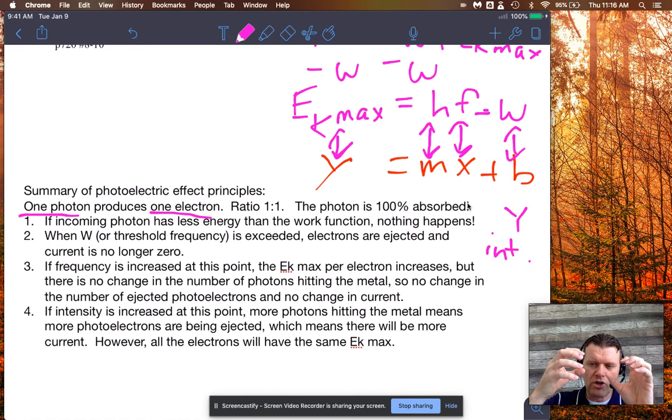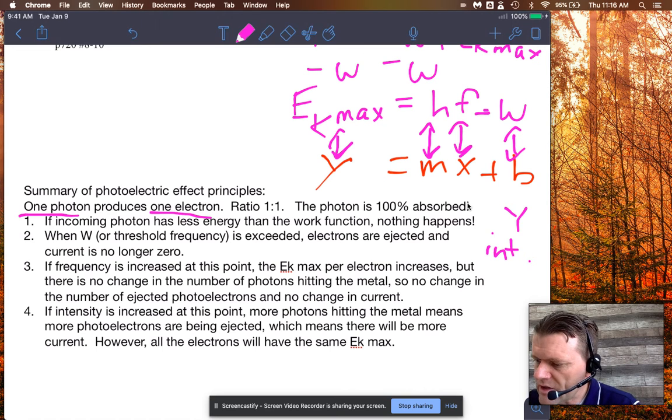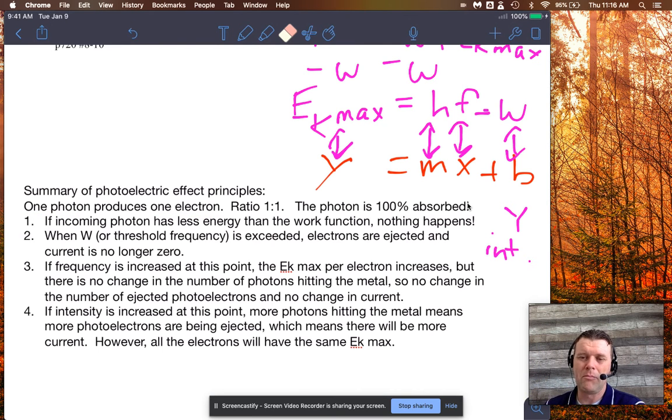So, the photon doesn't exist anymore after it hits the metal. All that energy is absorbed by the metal and then eventually by the electron, but the ratio is one to one for every photon. There is an electron produced or a photoelectron. So step one there just emphasizes, Hey, if the incoming photon has less energy than the work function, nothing's going to happen.